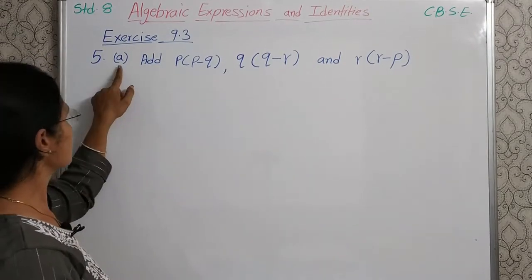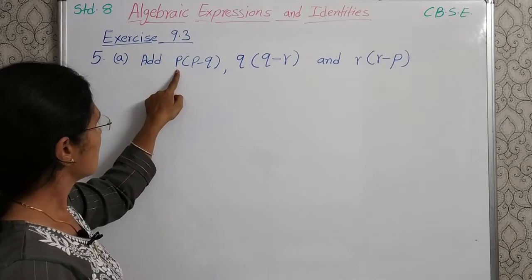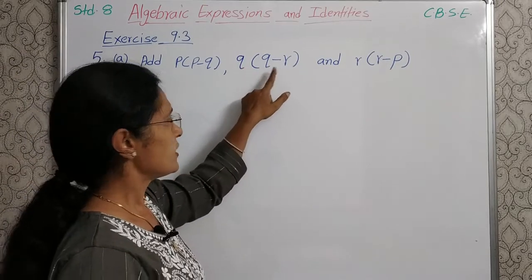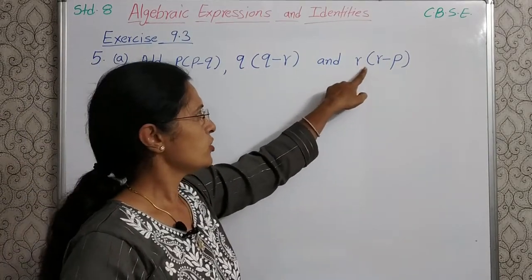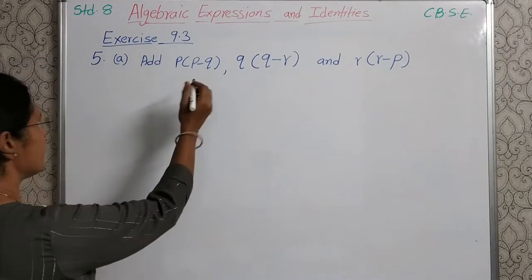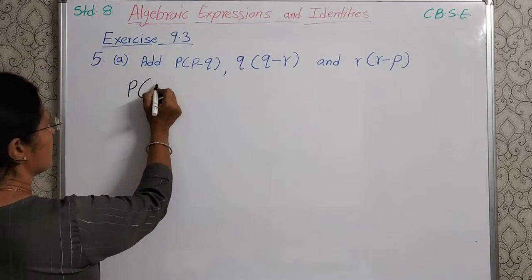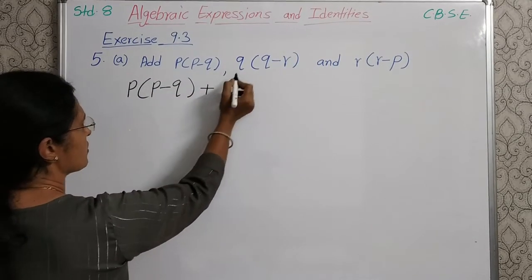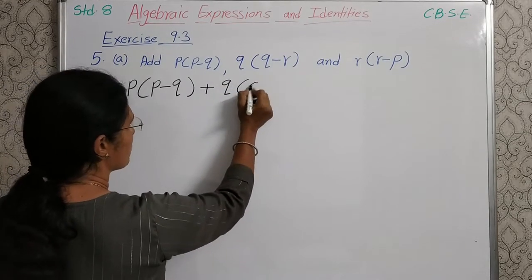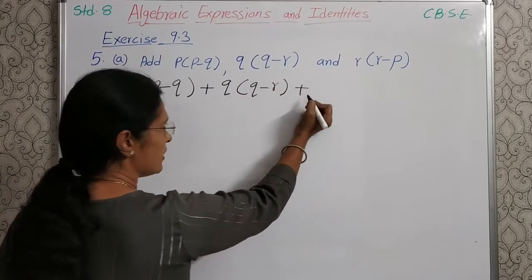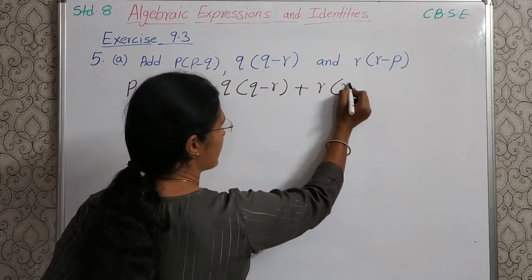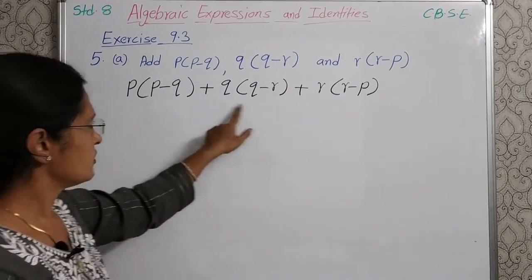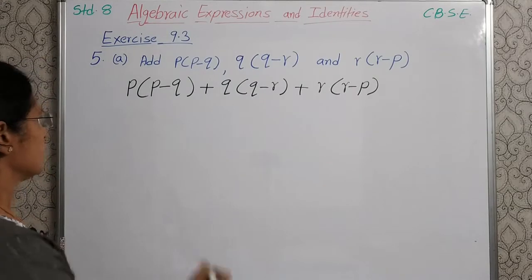First question, that is A: add P into bracket P minus Q, Q into bracket Q minus R, and R into bracket R minus P. So, let us write P(P minus Q) plus Q(Q minus R) plus R(R minus P). Now, first we will solve these brackets and then add.